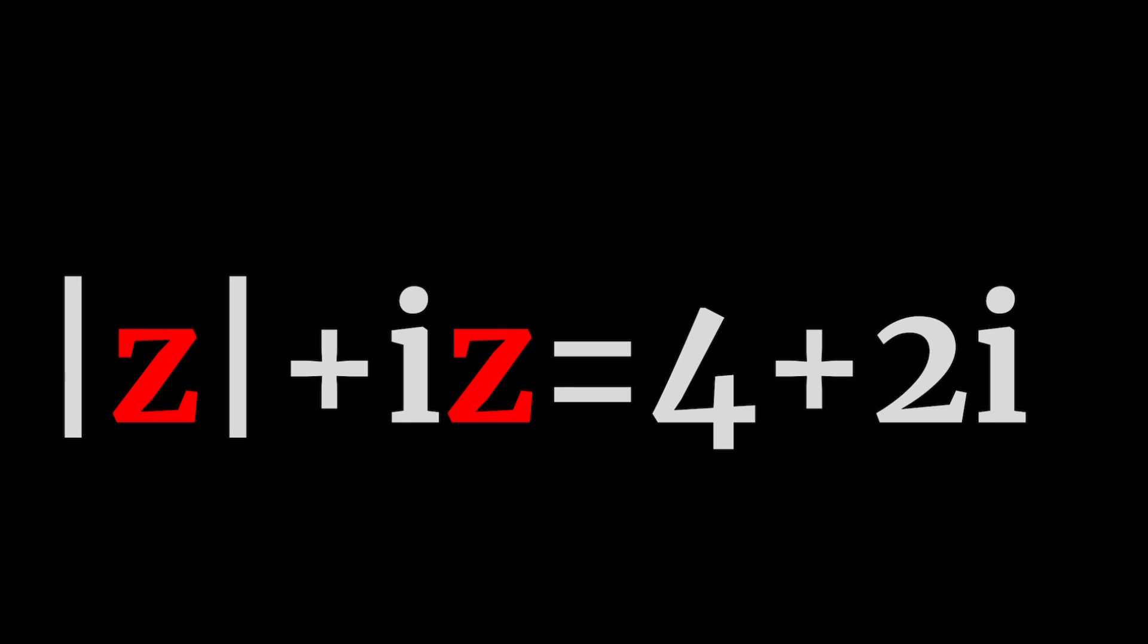Now we have the absolute value of z and iz. What does iz mean? z is a complex number and it can be written as a plus bi. What is so special about a plus bi? It's the name of this channel, that's what makes it super special. So what is the absolute value? Let's talk about that.